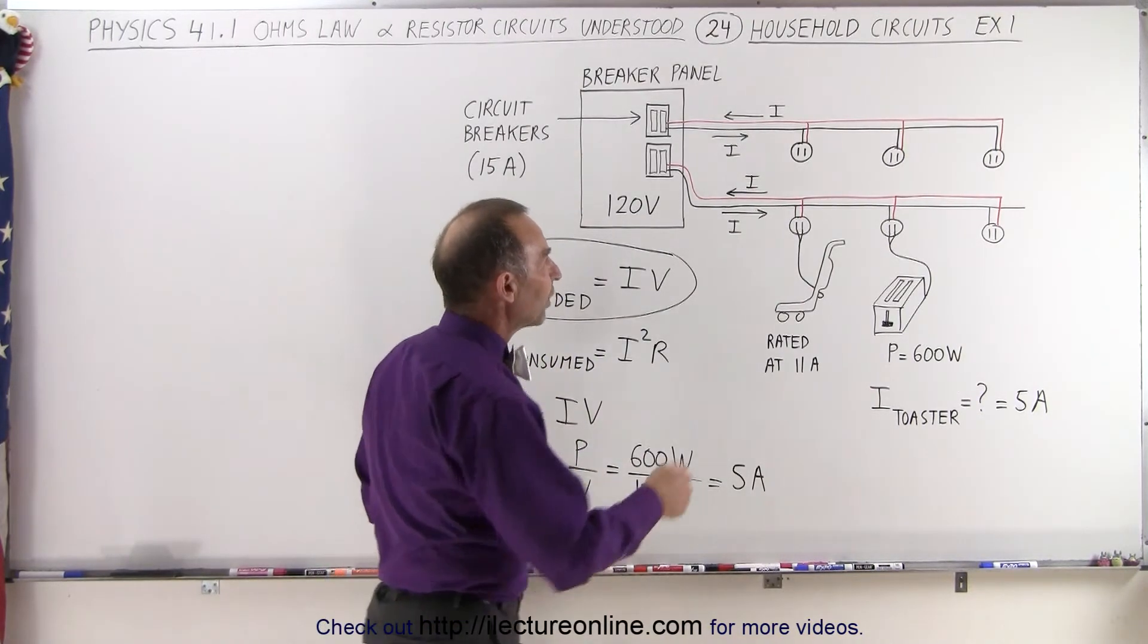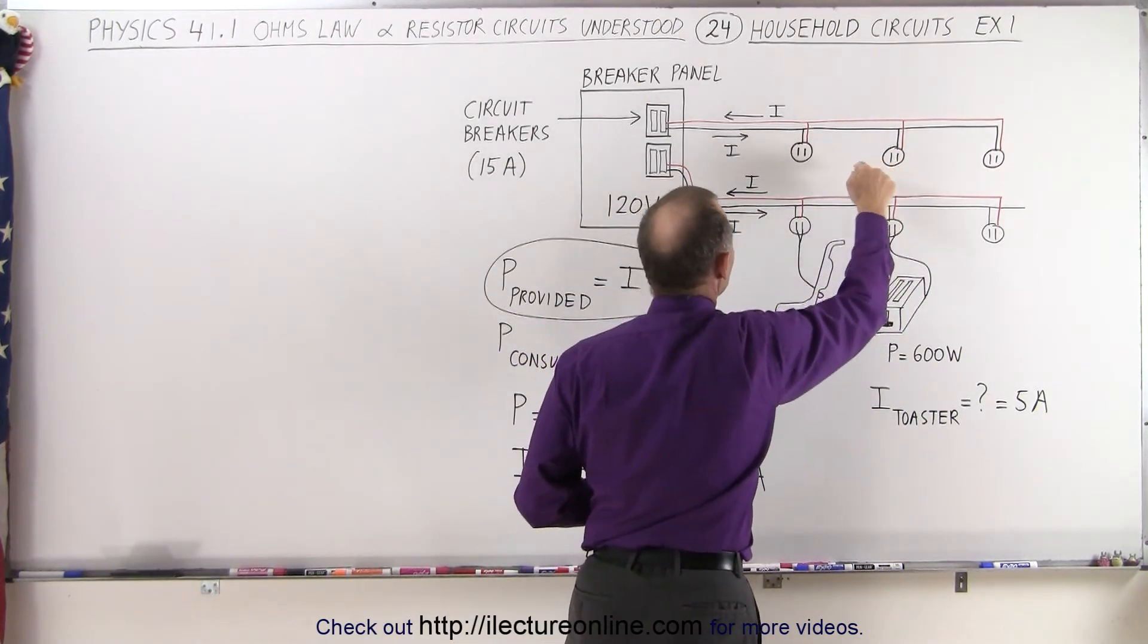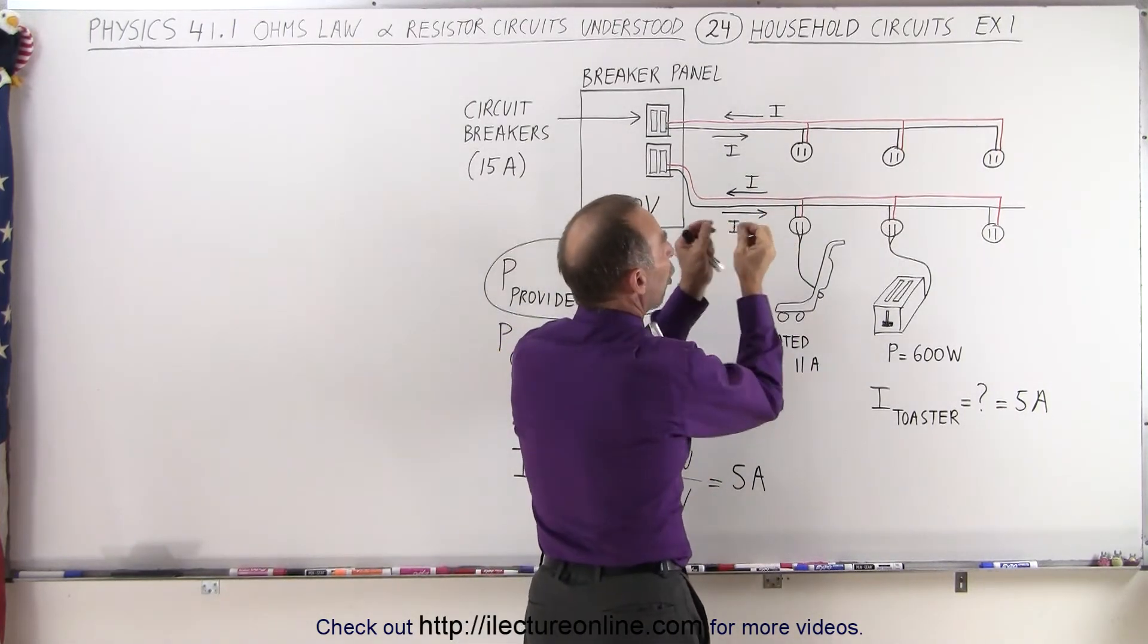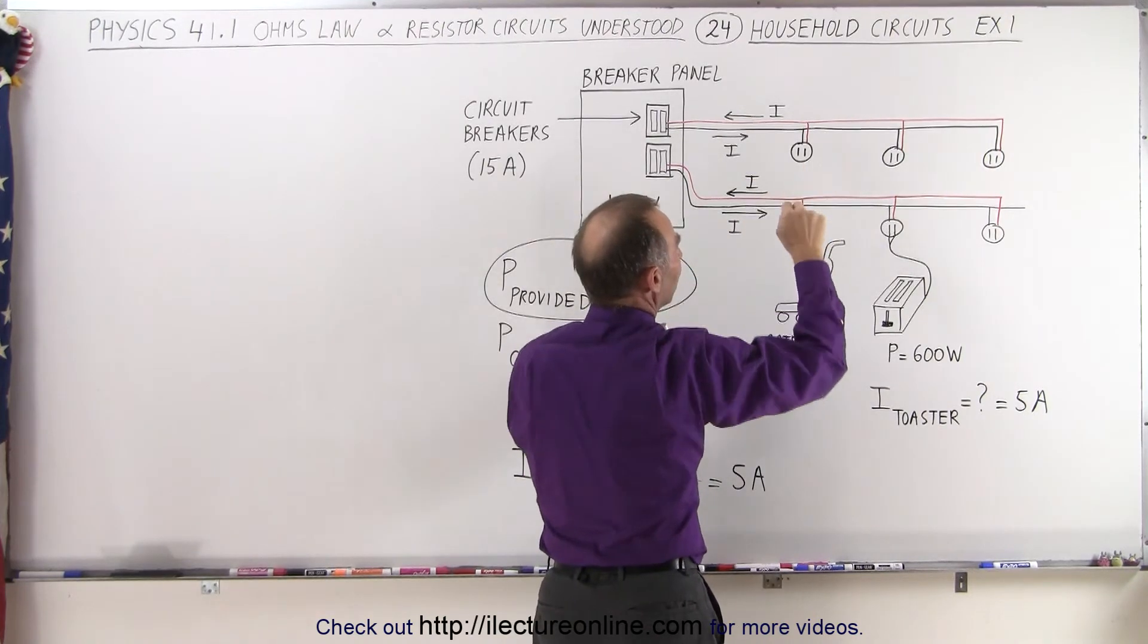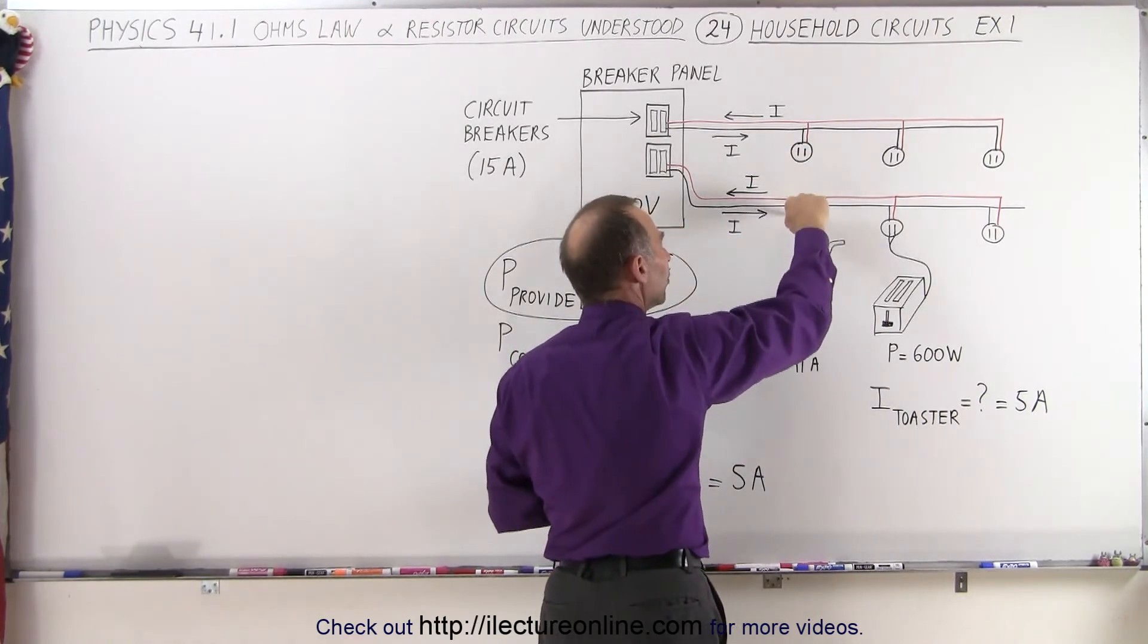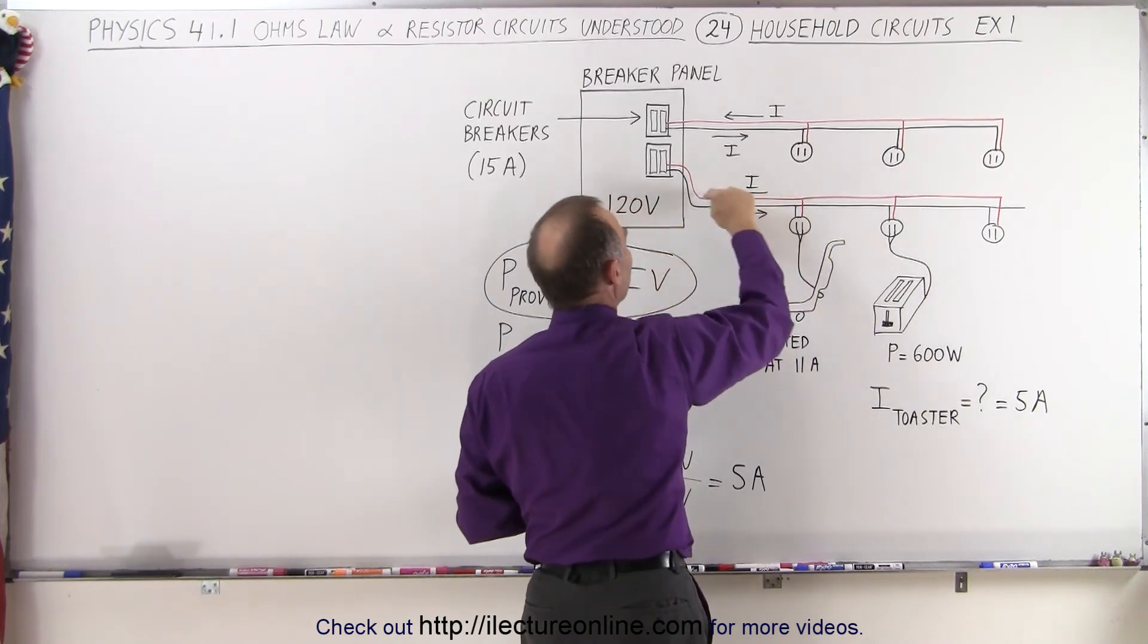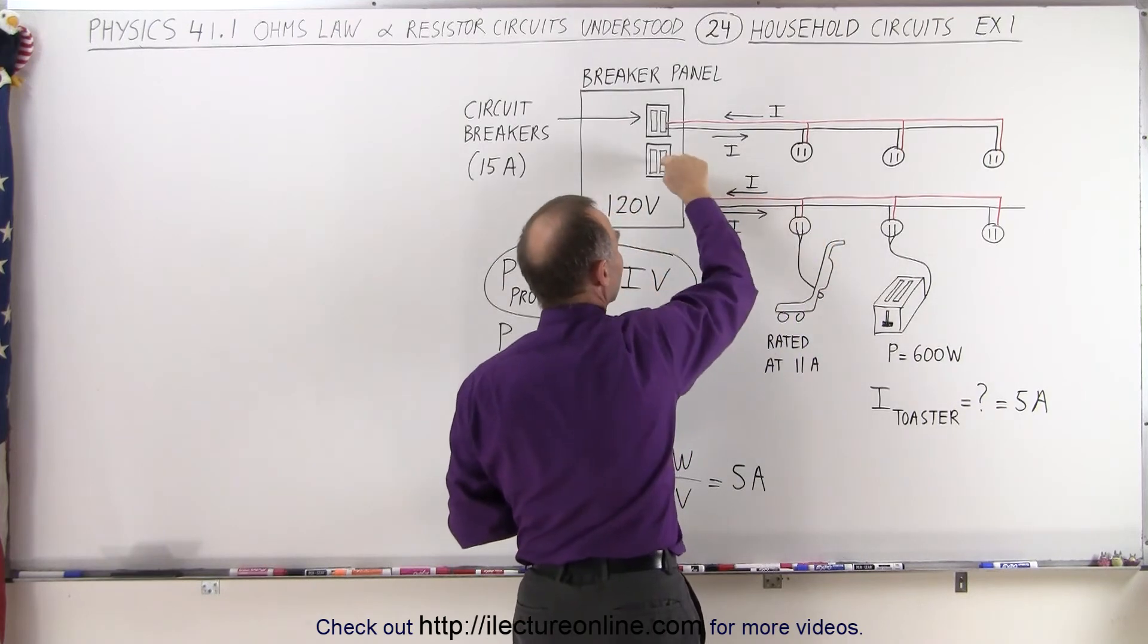Now also notice that if nothing is plugged into the circuit, no lights are turned on or nothing is plugged in, then no current will flow to the circuit. Every one of these outlets is basically an opening in the circuit. The way you allow current to flow through the circuit is to actually plug something in so that the current will run through the device, back into the other side, and back to the circuit breaker. So we have current flowing in one direction and current flowing back in the other direction.